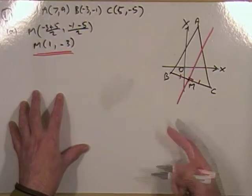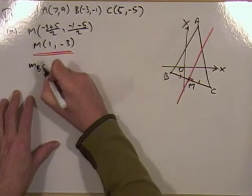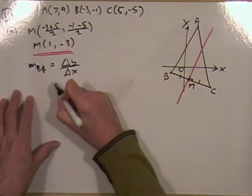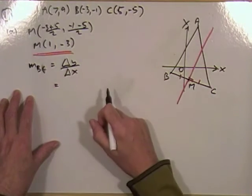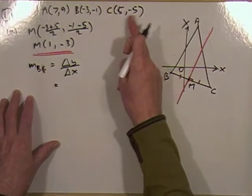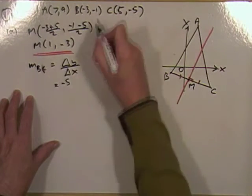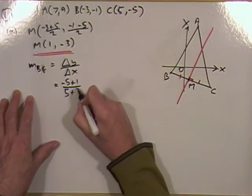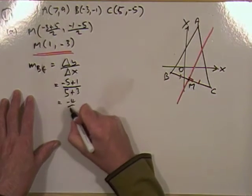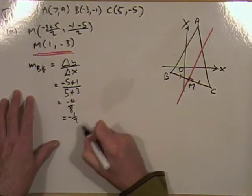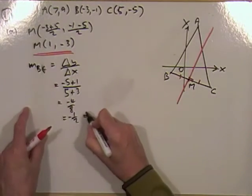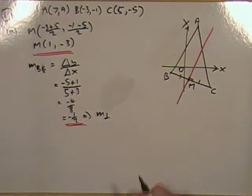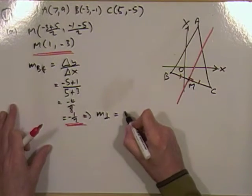Next, the gradient — compare it with BC. Gradient of BC is the difference in y coordinates over the difference in x coordinates between B and C. That's negative 5 take away negative 1, over 5 take away negative 3 — giving negative 4 upon 8, which is negative 1 half. The perpendicular gradient must give the product negative 1, so the perpendicular gradient will be 2.